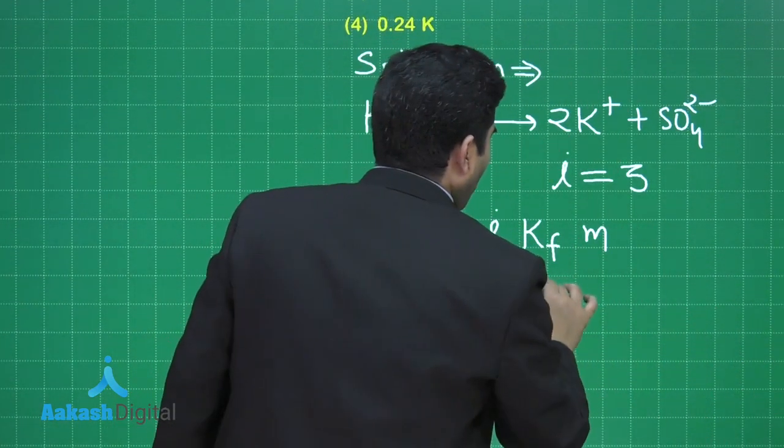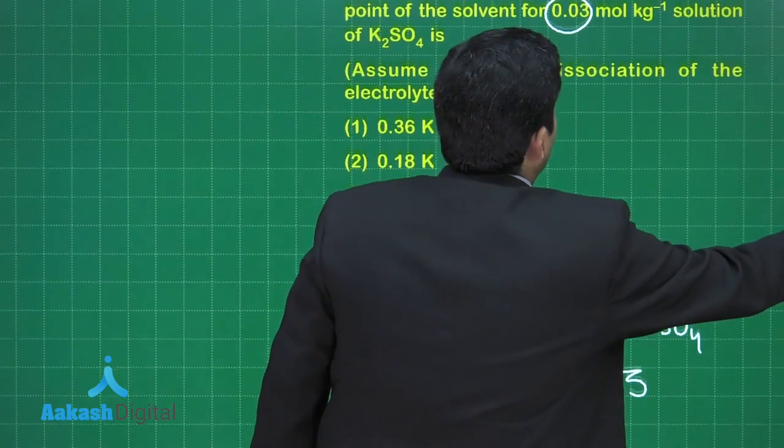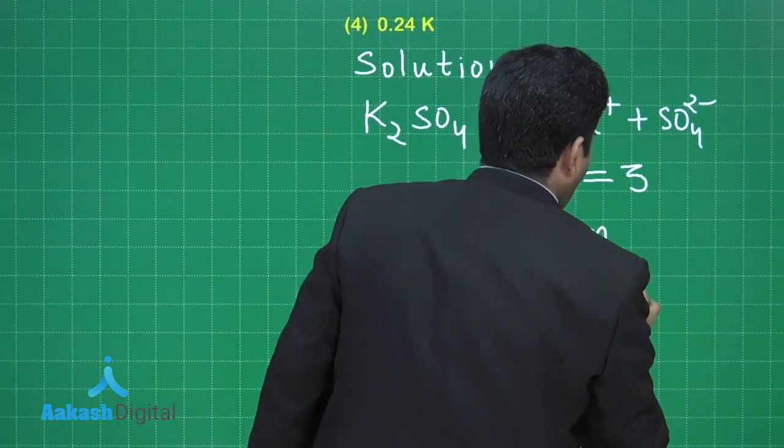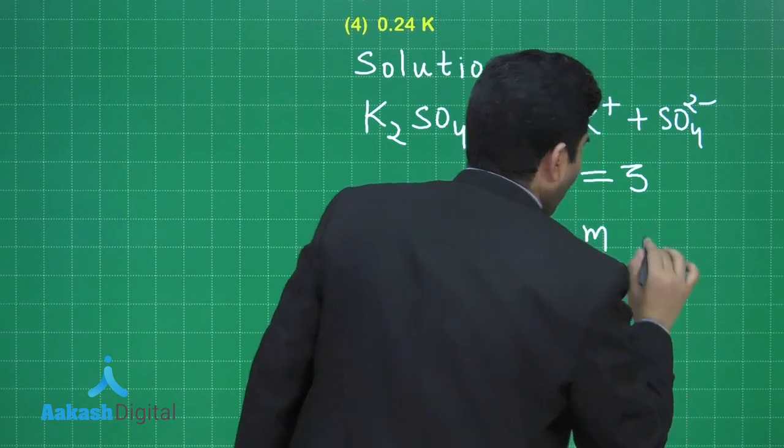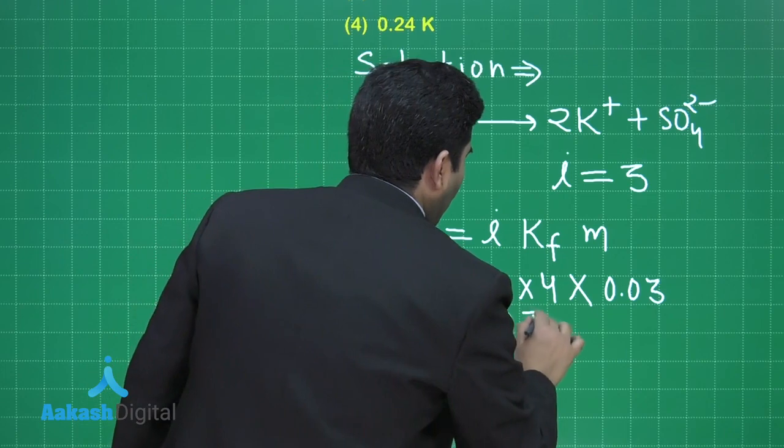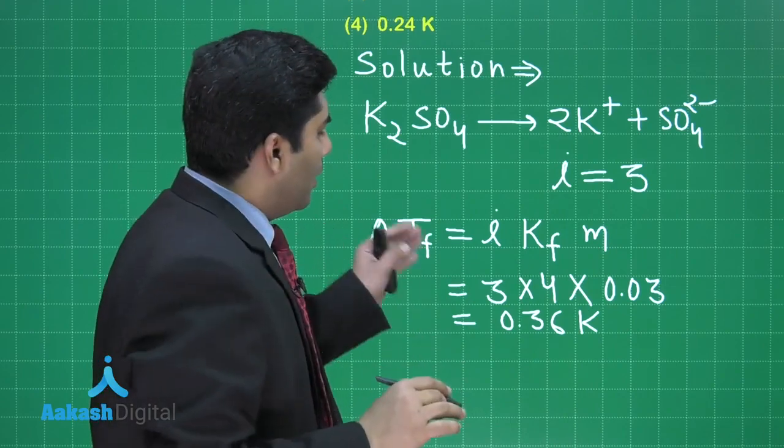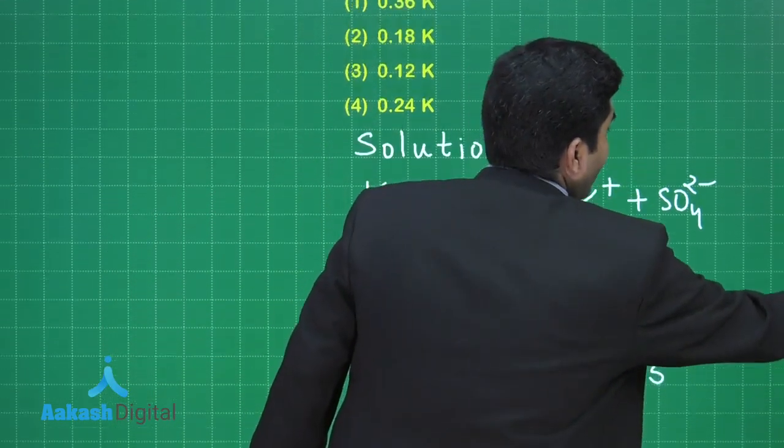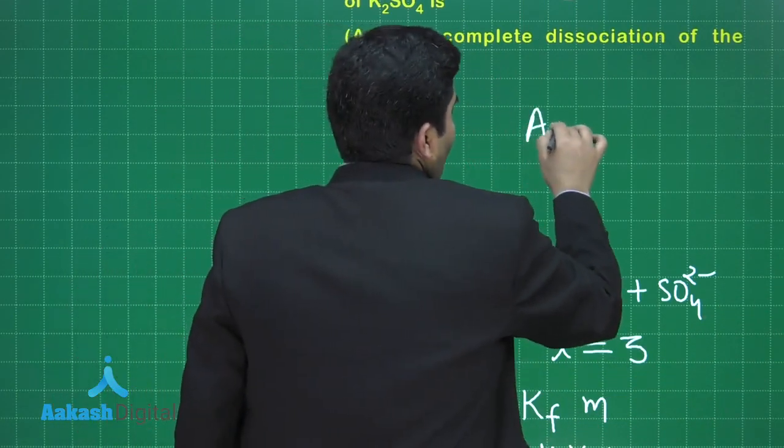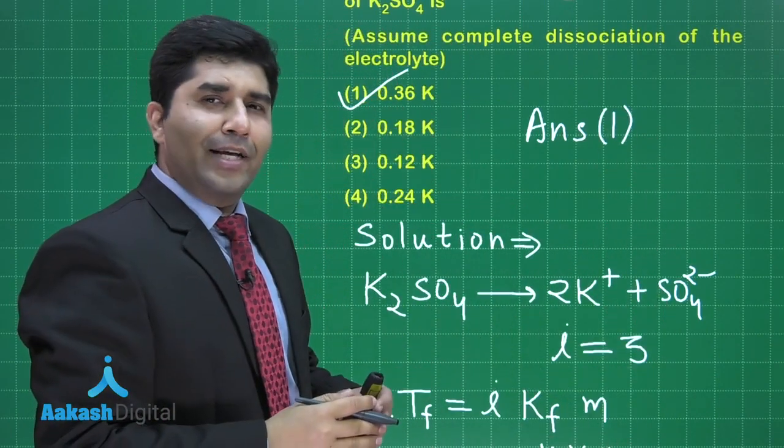So it is equal to 4 multiplied by M is the molality that is also given to us and that is equal to 0.03. So it is 0.03 and it is equal to 0.36 Kelvin. So this is the correct answer. And if you see the options, here it is. Answer of this question is option number 1. Let us move on to the next question.